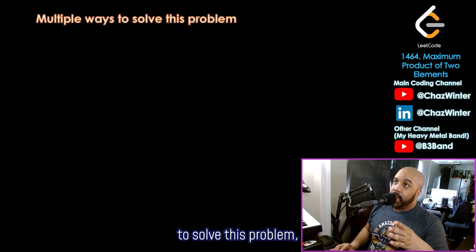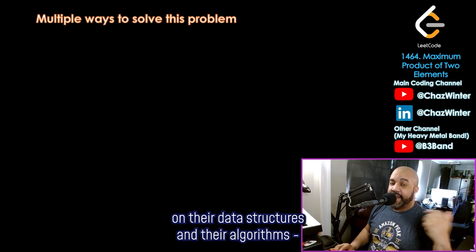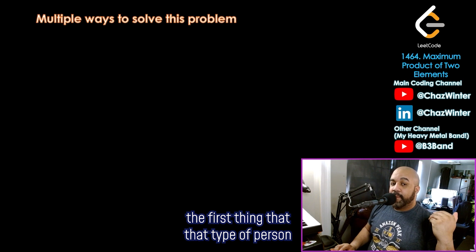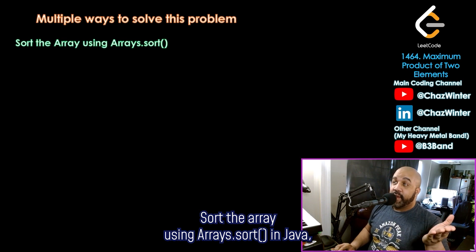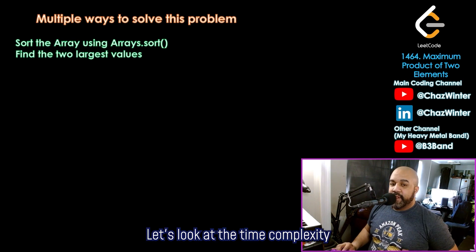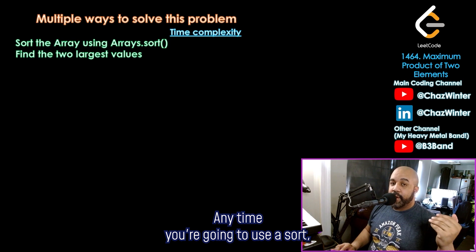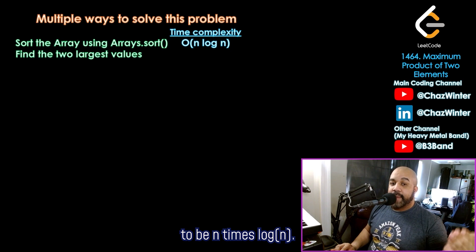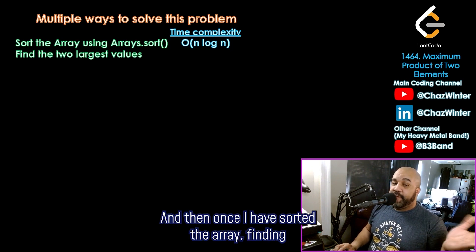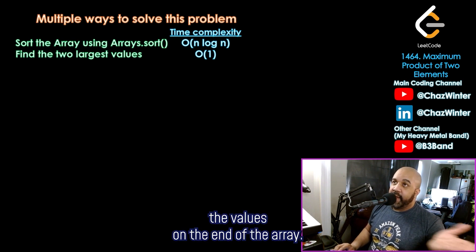Now, there are multiple ways to solve this problem. And somebody in an interview mindset who's been really studying on their data structures and their algorithms, the first thing that that type of person might do is consider sorting the array. Sort the array using arrays.sort in Java, and then just find the two largest values. Let's look at the time complexity of solving the problem this way. Sorting the array in general, anytime you're going to use a sort, you should expect the time complexity to be n times log of n. And then once I have sorted the array, finding the two largest values can be done in constant time. They go of 1 because they're just the values on the end of the array.